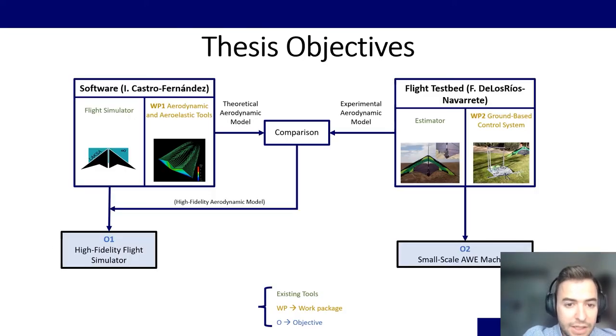The activities developed by the AWE group at UC3M are basically divided into two groups. The one of software on the left, where we have flight simulators and aerodynamic and aeroelastic tools, which I called the Work Package 1, and this is the focus of my thesis. Basically the result of these tools are going to be the theoretical aerodynamic coefficients, force and moment coefficients.